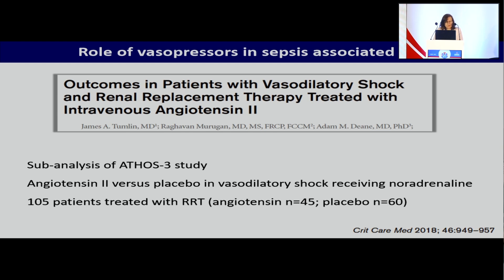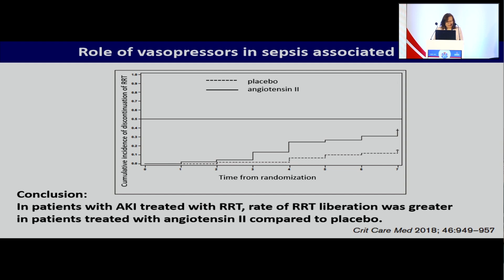The ATHOS-3 was a randomized controlled trial looking at the role of angiotensin-2 in patients with septic shock versus noradrenaline. In a sub-analysis, they looked at all the patients who were on renal replacement therapy at enrollment — a total of 105, of whom 45 had been randomized to angiotensin. The patients who were randomized to angiotensin came off renal replacement therapy faster compared to patients on placebo. This fits with physiology because angiotensin acts on the efferent branch. But this would have to be repeated in a clinical trial before we advocate that angiotensin should be used to help patients coming off the filter.